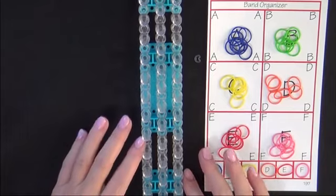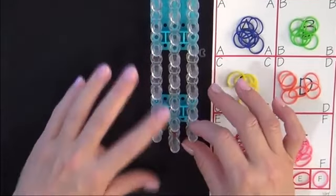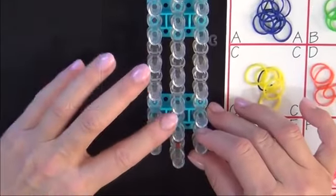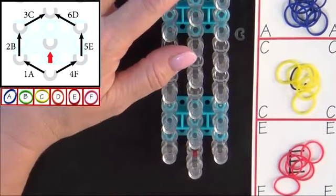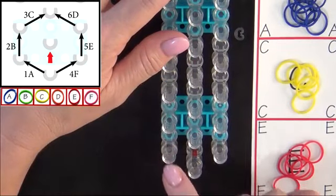Now, let's get started. Turn your loom so that the red arrow is pointing away from you. Refer to the diagram on your screen to place the first 6 bands on your loom. You'll be forming a hexagon.